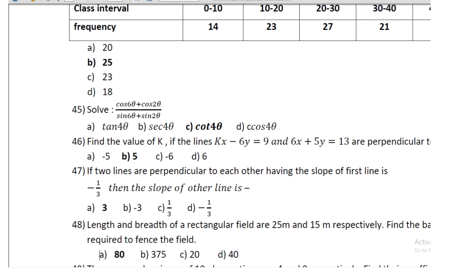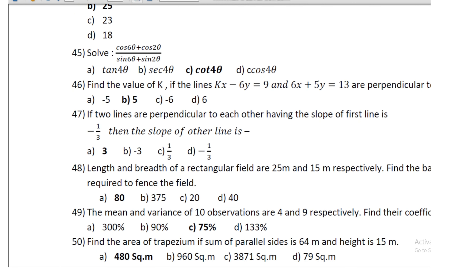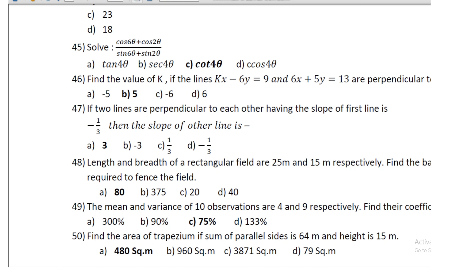Question 44: the length and breadth of a rectangular field are 25 m and 15 m respectively; find the barbed wire required to fence the field — it is 80 m. Question 45: the mean and variance of 10 observations are 4 and 9 respectively; find the coefficient of variation — it is 75%.